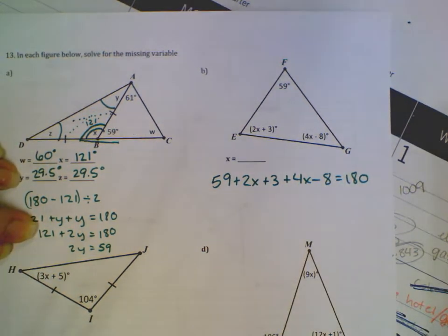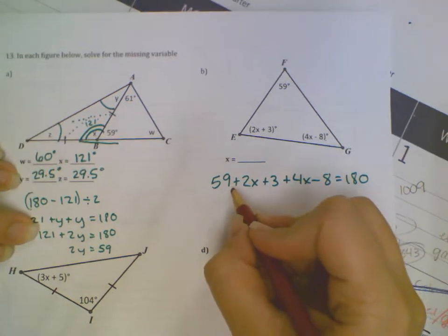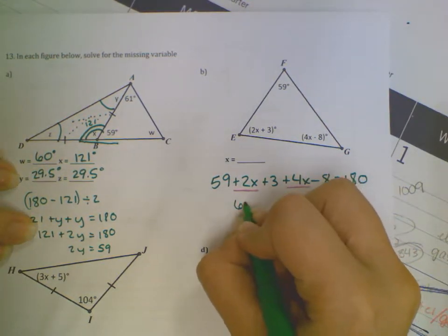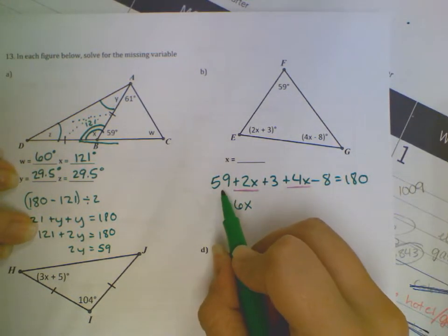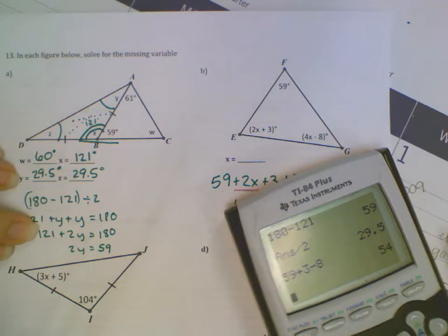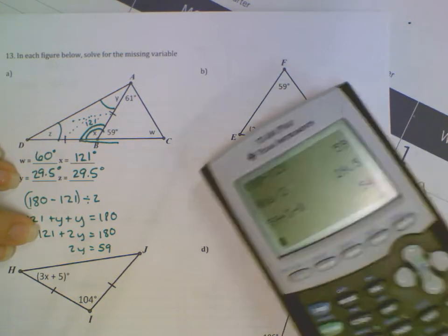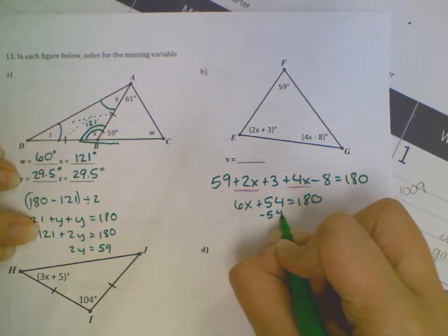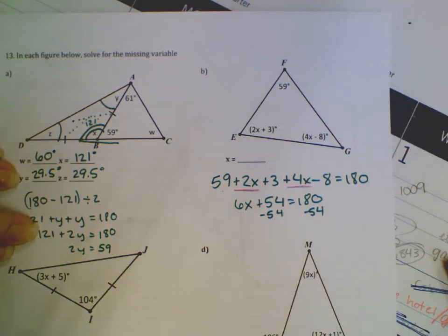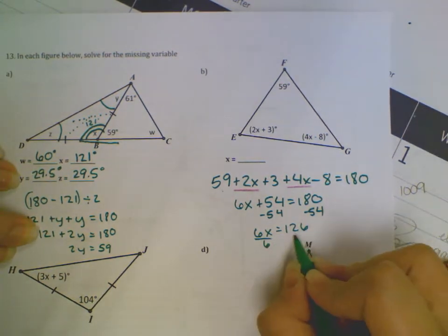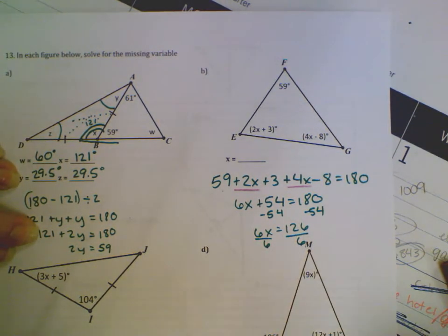I'll combine my like terms. I've got 2X and 4X, so I've got 6X. And 59 plus 3 minus 8 gives me 54. So, 6X plus 54 equals 180. Subtract 54 from both sides. 180 minus 54 gives me 126, and 6X equals 126. Then I'll divide by 6, and X will be 21.